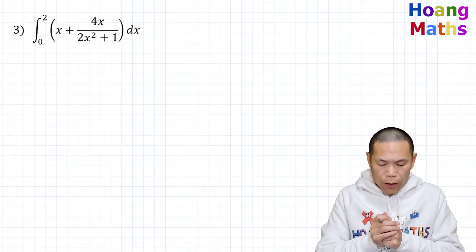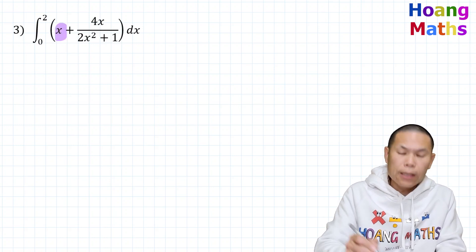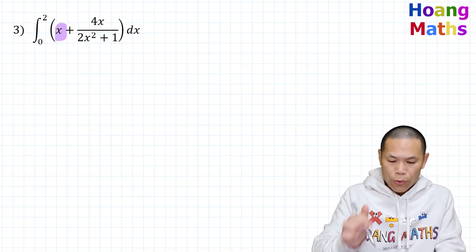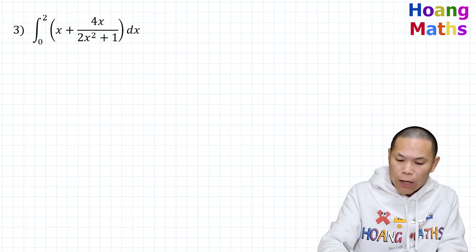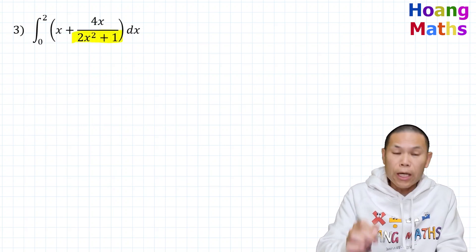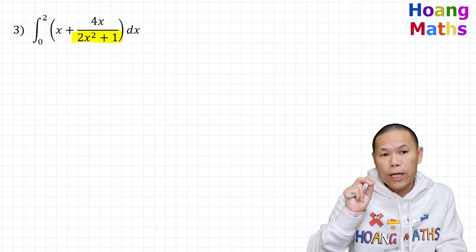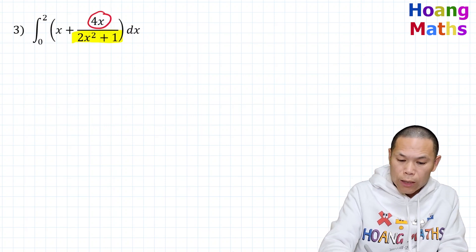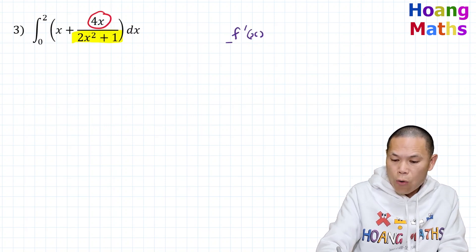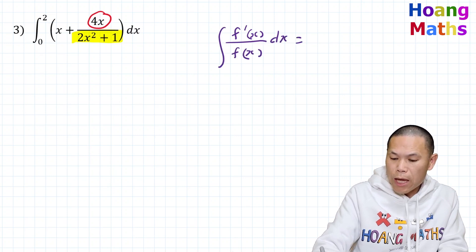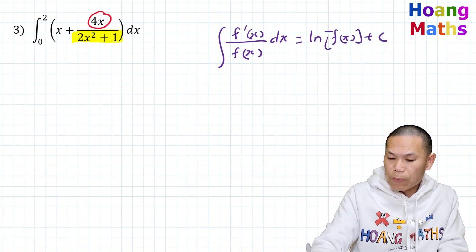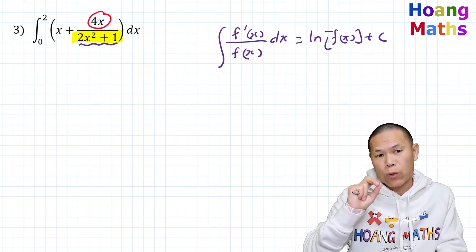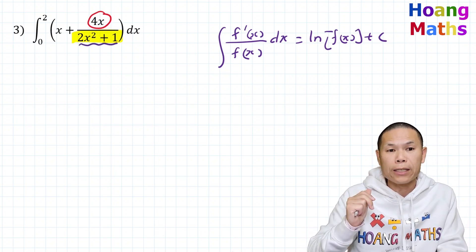Third one. We know that integrating x gives x squared over 2. For the second function, if we differentiate the bottom, 2x squared plus 1, it gives 4x. So 4x is f'(x). Integrating f'(x) over f(x) gives ln|f(x)|. This means 2x squared plus 1 is f(x) and 4x is f'(x). So the integral of x plus 4x over 2x squared plus 1 dx from 0 to 2 gives x squared over 2 plus ln|2x squared plus 1|.